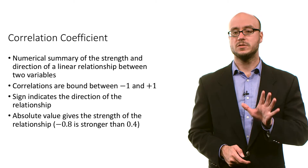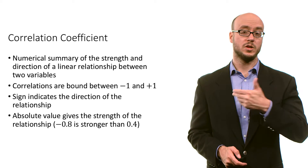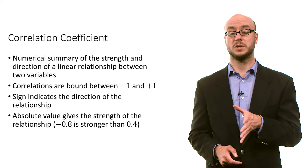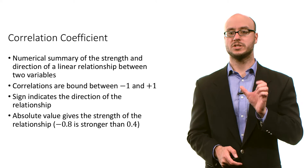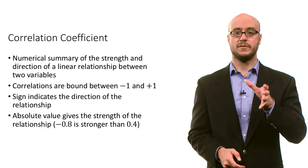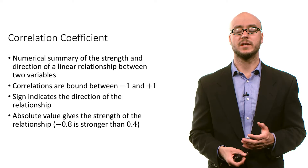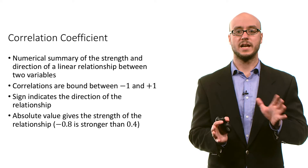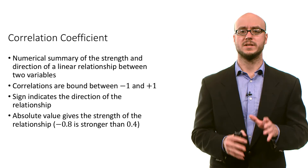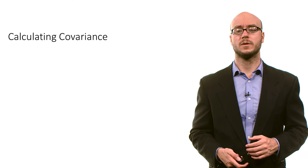It's a very useful measure. It keeps the sign from covariance, but it also gives us the strength of the relationship. You just take the absolute value of the correlation value, and we have an idea of the strength. So negative 0.8 is stronger than 0.4, because the absolute value of negative 0.8 is greater than that for 0.4.